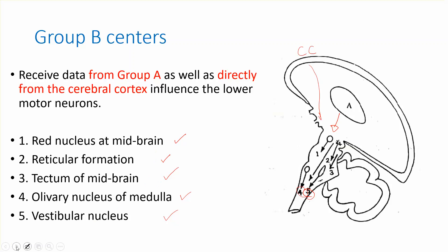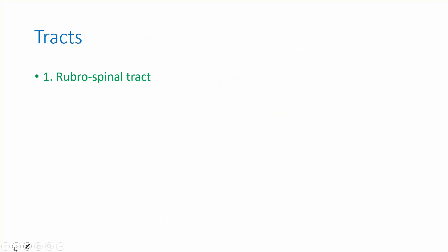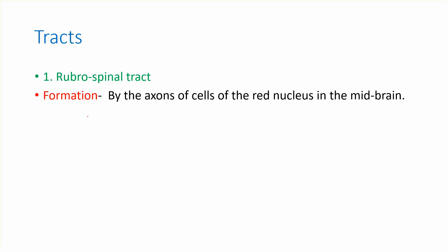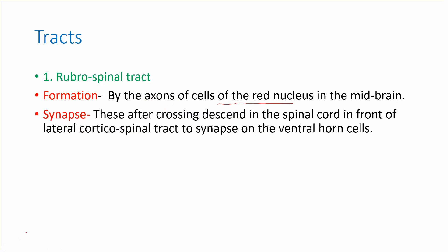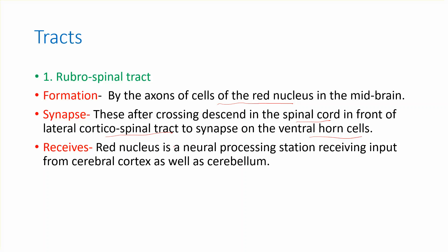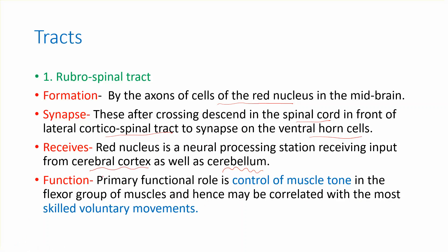The first tract we discuss is the rubrospinal tract, starting from the red nucleus. It is formed by axons of cells of the red nucleus in the midbrain. These fibers cross and descend in the spinal cord in front of the lateral corticospinal tract, synapsing on the ventral horn cells. The red nucleus receives input from the cerebral cortex and the cerebellum, and its function is primarily to control muscle tone in the flexor group of muscles, and it may be correlated with skilled voluntary movements.